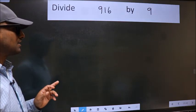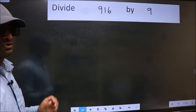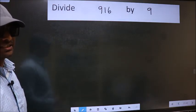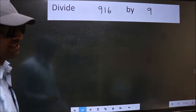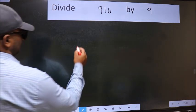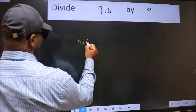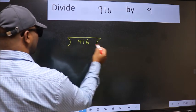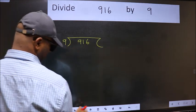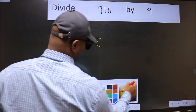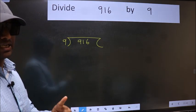Divide 916 by 9. To do this division, we should frame it in this way: 916 here and 9 here. This is your step 1.